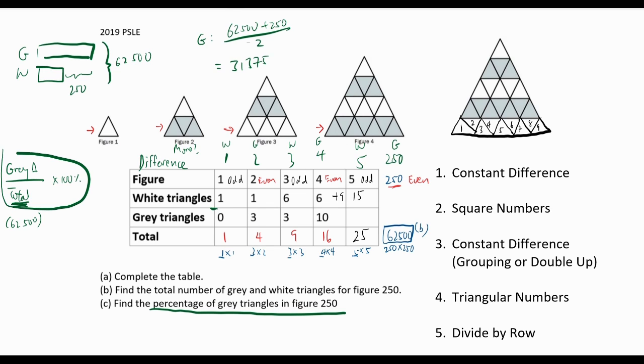To find the percentage of grey triangles, we express grey triangles as a fraction of total triangles and convert it to a percentage, which is 50.2%.